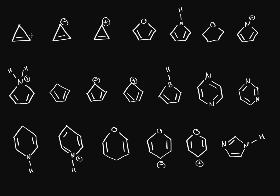So let's start off with the first one. On this first one we have an sp3 hybridized carbon right there, so this is automatically non-aromatic. But this one over here, they're all sp2 hybridized and we have 1, 2, 3, 4 pi electrons. Since this is a member of 4n, this is going to be anti-aromatic.